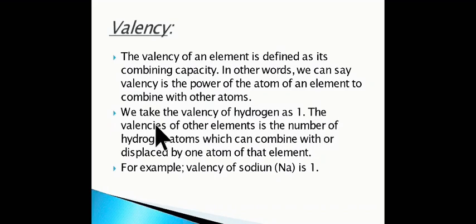The valencies of other elements is the number of hydrogen atoms which can combine with or displace one atom of that element. For example, valency of sodium or Na is one because only one hydrogen atom can combine with one atom of sodium.